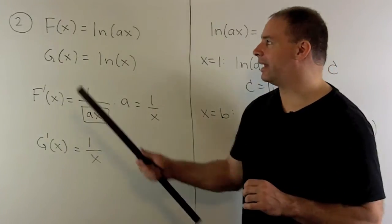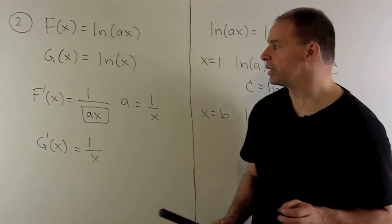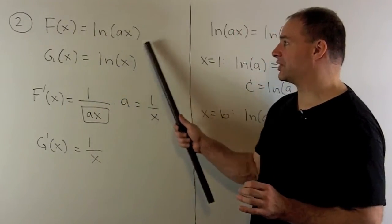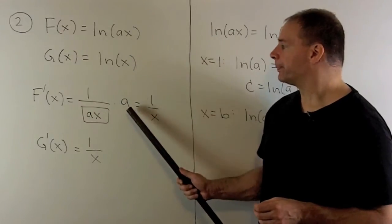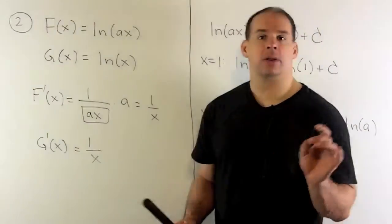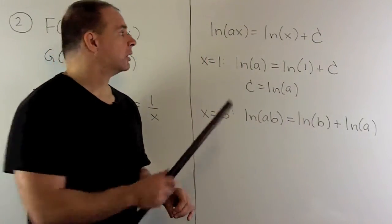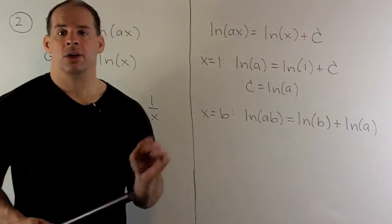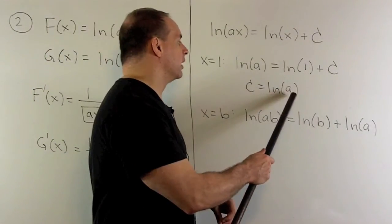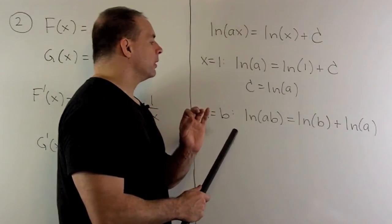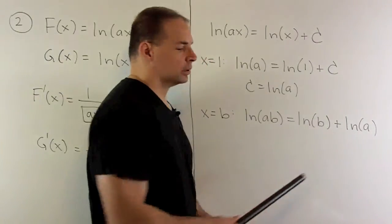For our second property with the slick method, let F of x equal natural log of ax and G of x equal natural log of x. Taking the derivative of F: natural log has ax in the box, so by the chain rule I get one over ax times the derivative of the inside, which is a — giving one over x. The derivative of G, which is natural log of x, is also one over x. So these derivatives are equal, meaning the functions are equal up to a constant. Solving for the constant by letting x equal one: natural log of a equals natural log of one plus c, and since natural log of one equals zero, the constant is natural log of a. Letting x equal b then gives natural log of ab equals natural log of b plus natural log of a, which is what we want.